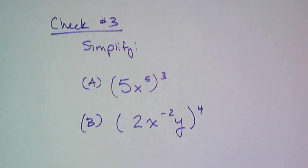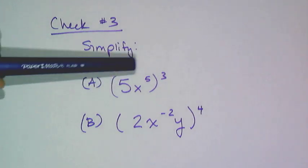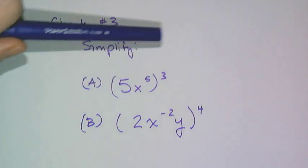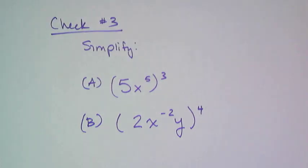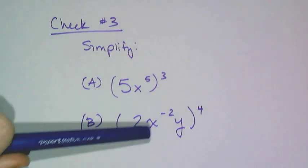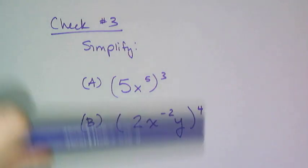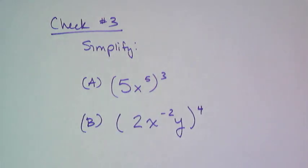Now for the final check: let's see if you can do some product to a power rule questions on your own. Simplify 5x to the fifth, all raised to the third power. And simplify 2x to the negative 2 times y, all raised to the fourth power.